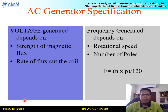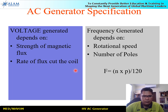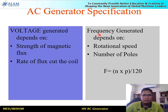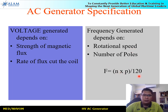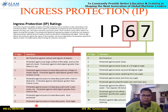To summarize: voltage generated in a generator depends on the strength of magnetic flux — controlled by excitation current — and the rate at which flux cuts the coils, which is the generator's rotational speed. For frequency, the formula is f = (n × P) / 120, where n is speed in RPM and P is the number of poles. Both high voltage and low voltage generators operate at the same frequency of 60 Hz.